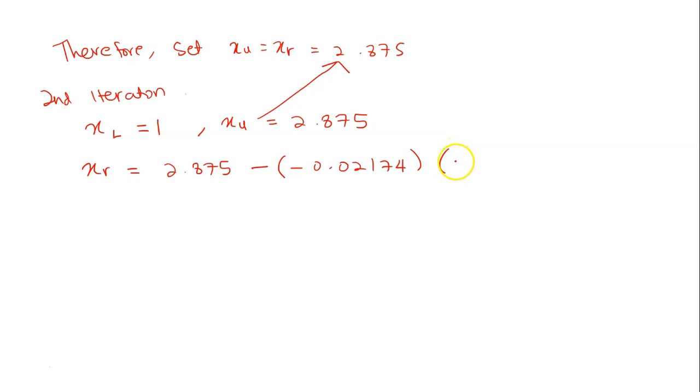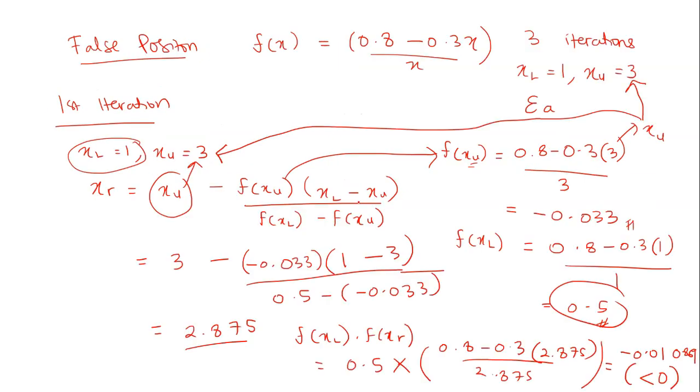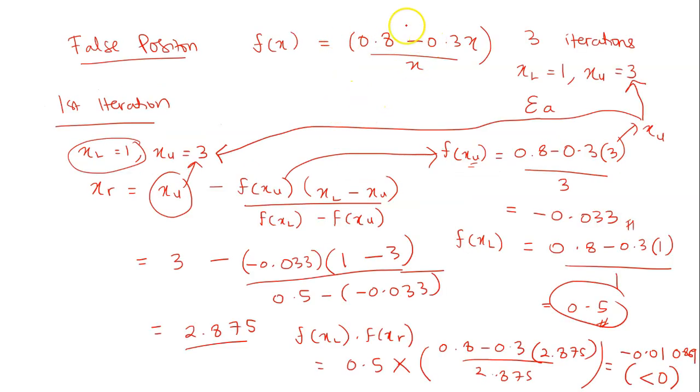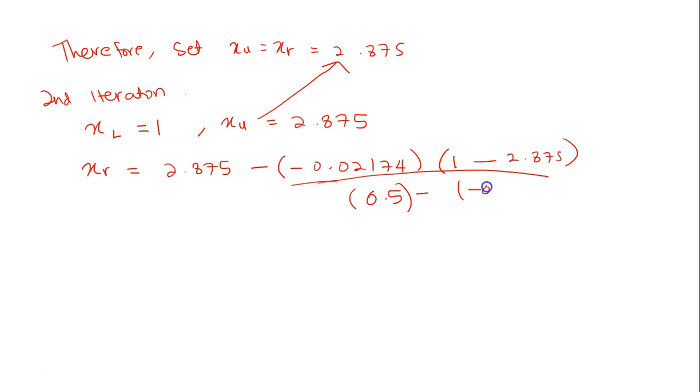times x_l minus x_u which is 1 minus 2.875 divided by your f(x_l) which is 0.5 minus your f(x_u). f(x_u) is just your calculation for x_u here just substitute into this function. So this is negative 0.02174. So x_r you will get 2.79688.